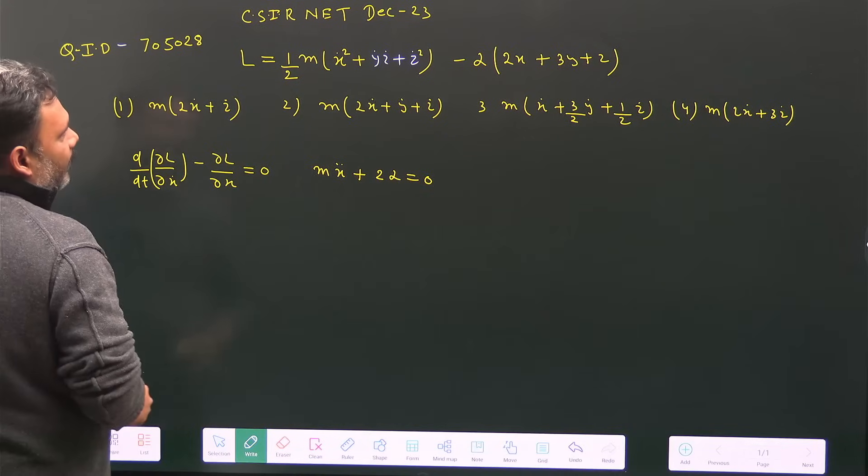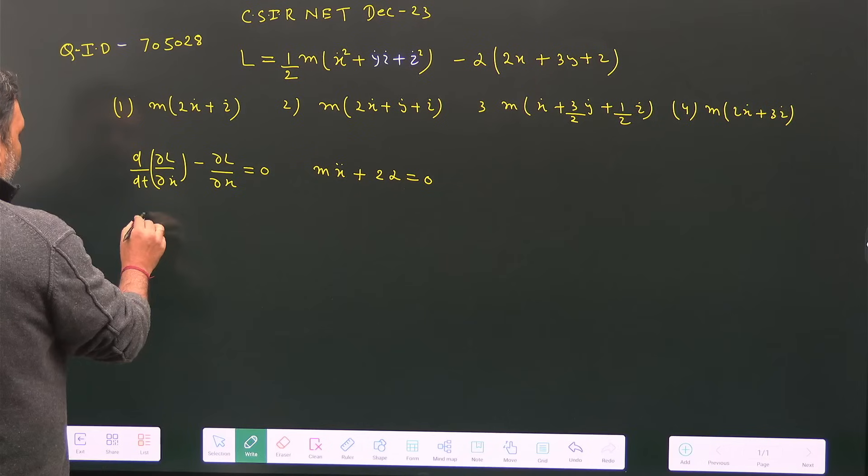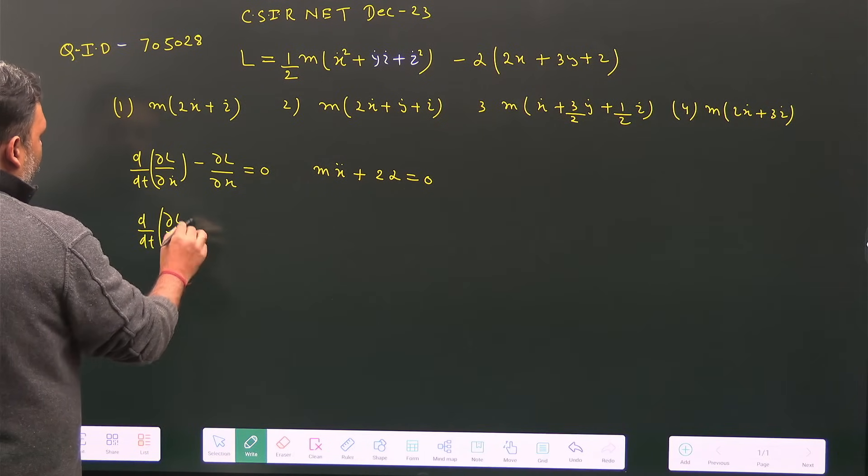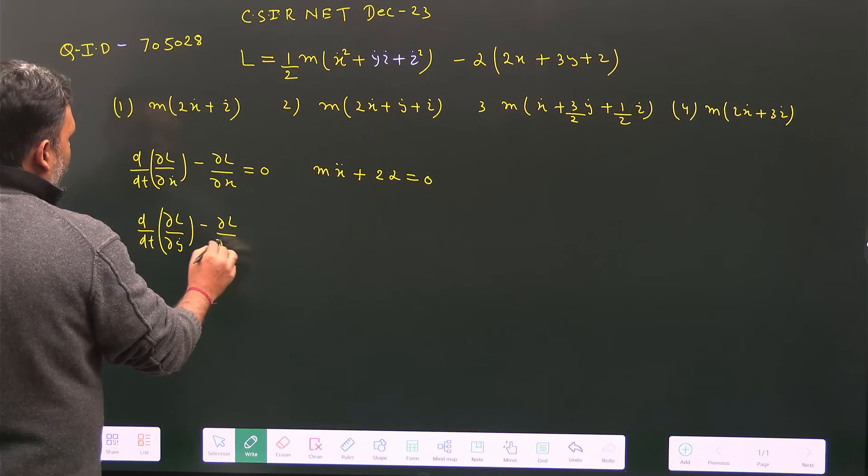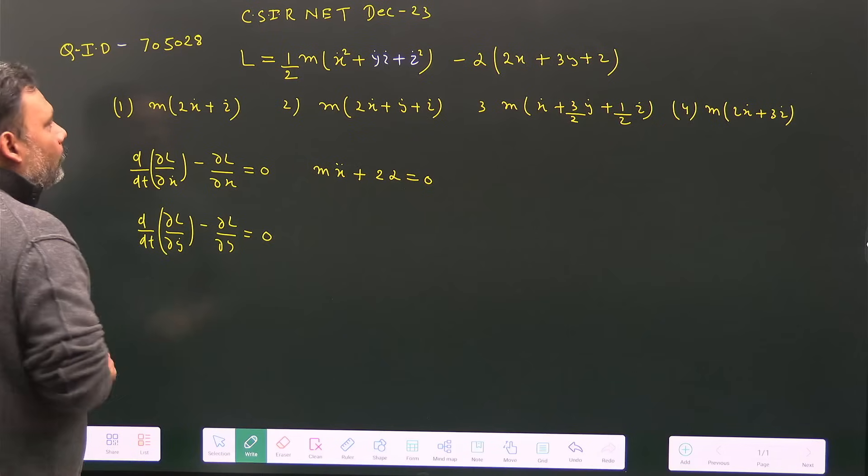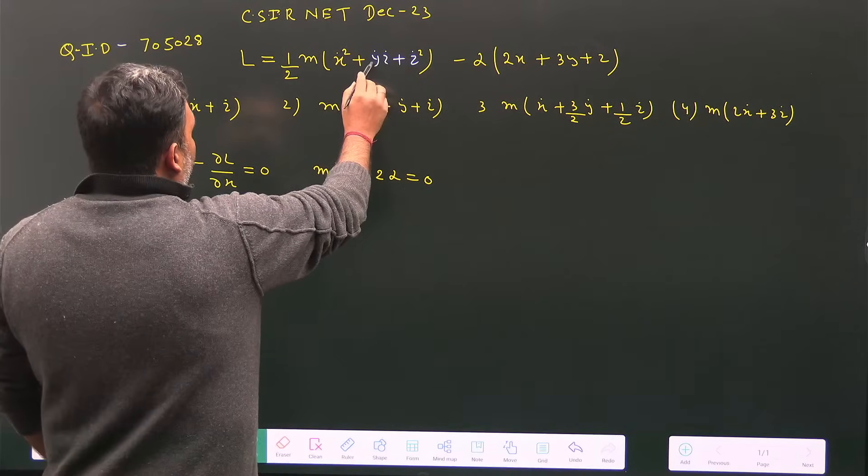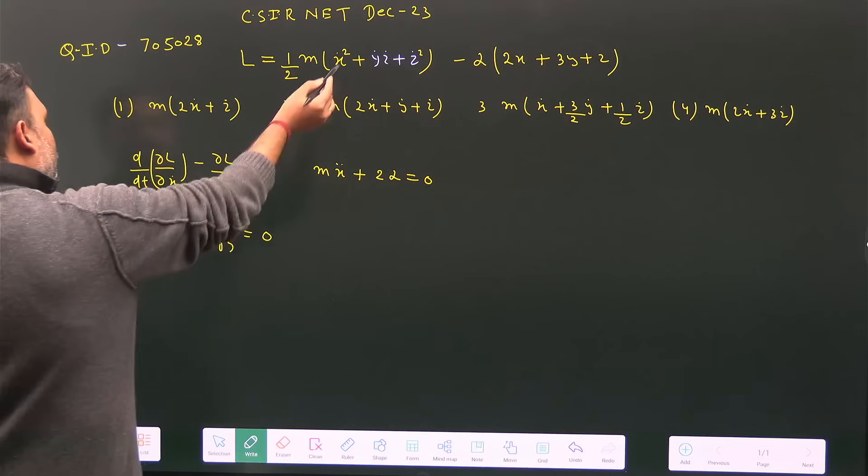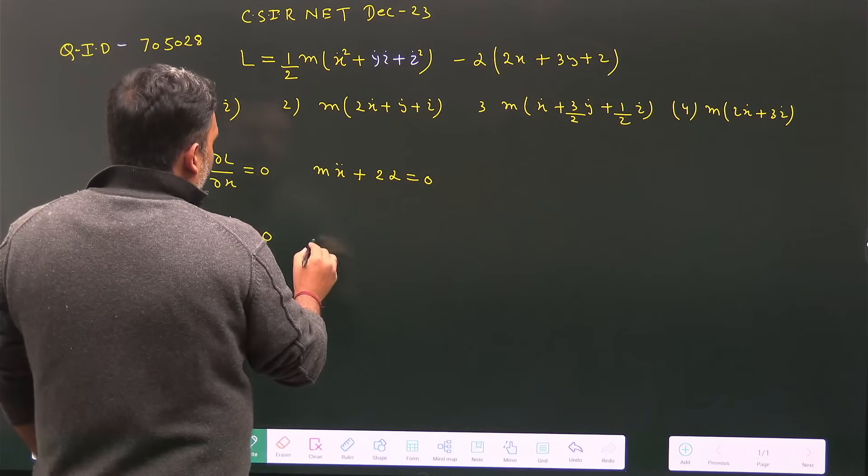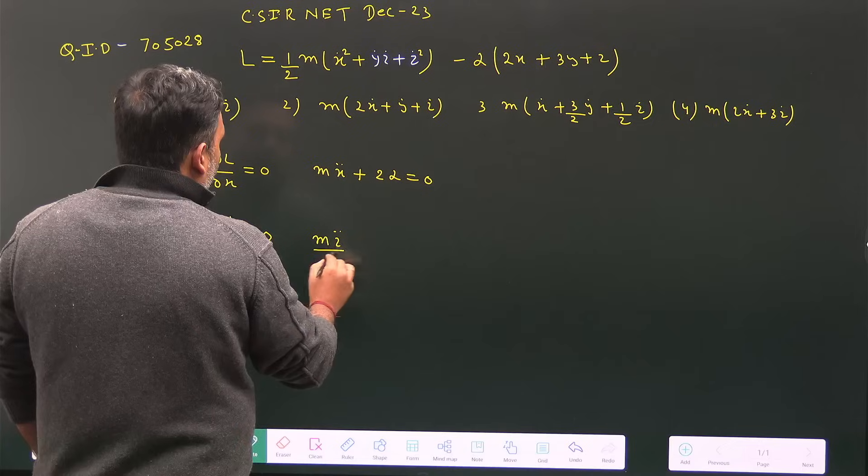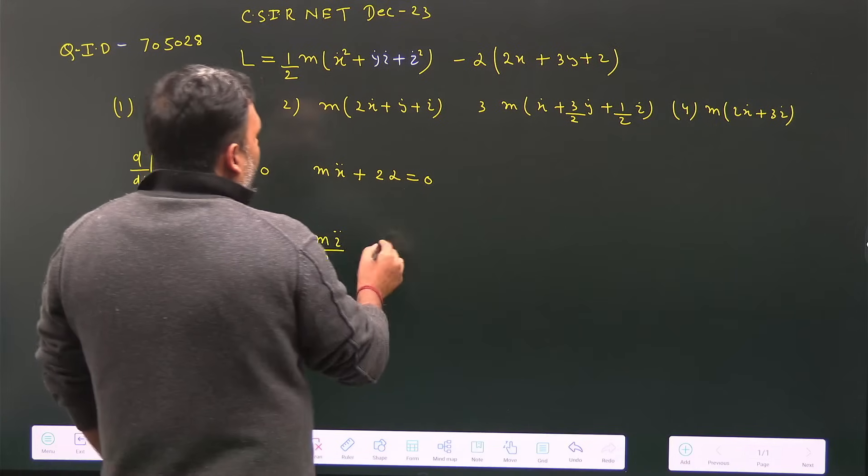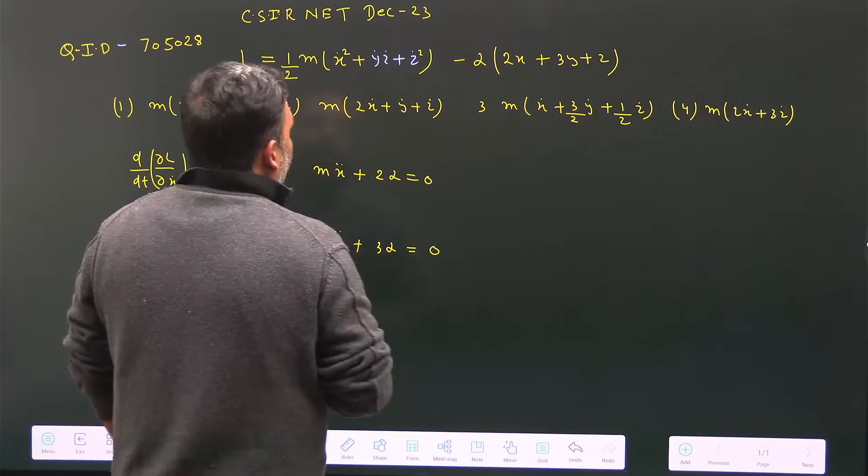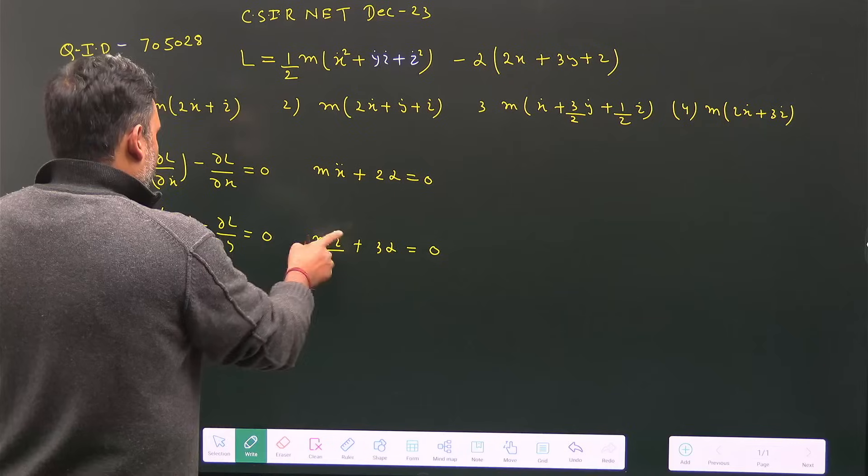For y: d/dt(∂L/∂ẏ) - ∂L/∂y = 0. We have to be careful that y dot and z dot are both there. When we take the partial derivative with respect to y dot, z dot will remain. So we get mz̈/2 + 3α = 0 for y.